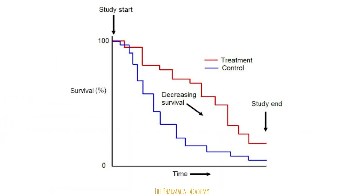If we plot this on a graph, we get something that looks like this. Assume this is a clinical trial comparing two groups — one that received the treatment drug in red, and the other that received the control in blue. We are analyzing the time to death. The y-axis represents the percentage of patients alive, and the x-axis is the time. As time passed, participants experienced the event of interest — death — causing the lines to continue to fall. This graph is also known as a Kaplan-Meier curve.